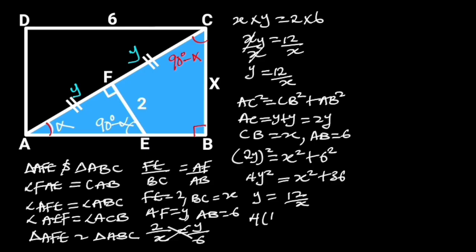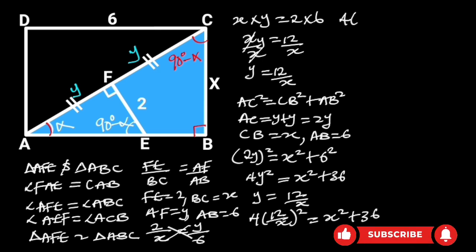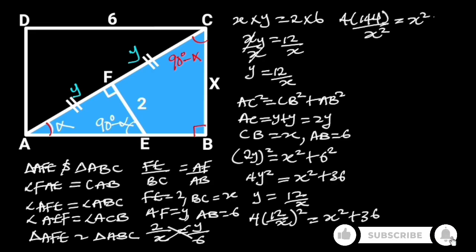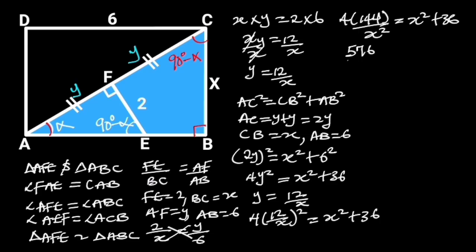Is equal to X squared plus 36, which will give us 4 times 144 over X squared is equal to X squared plus 36. 4 times 144 is 576. So we have 576 over X squared is equal to X squared plus 36.